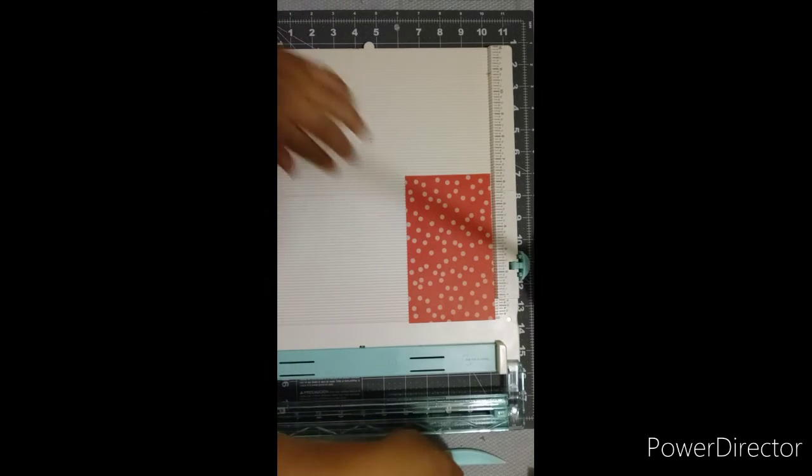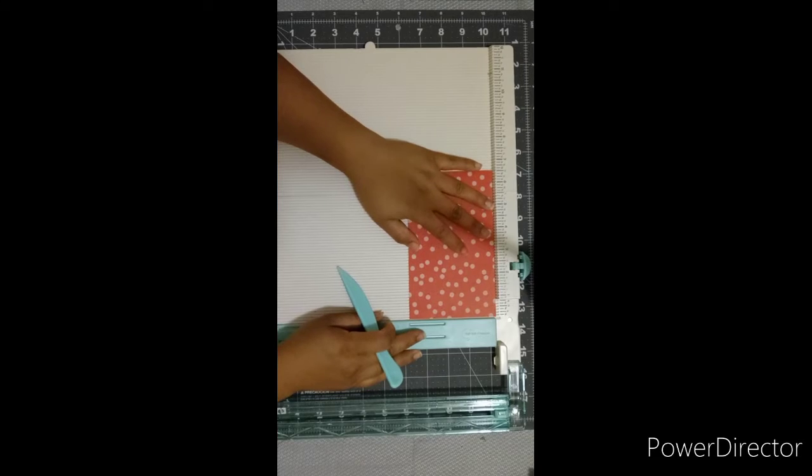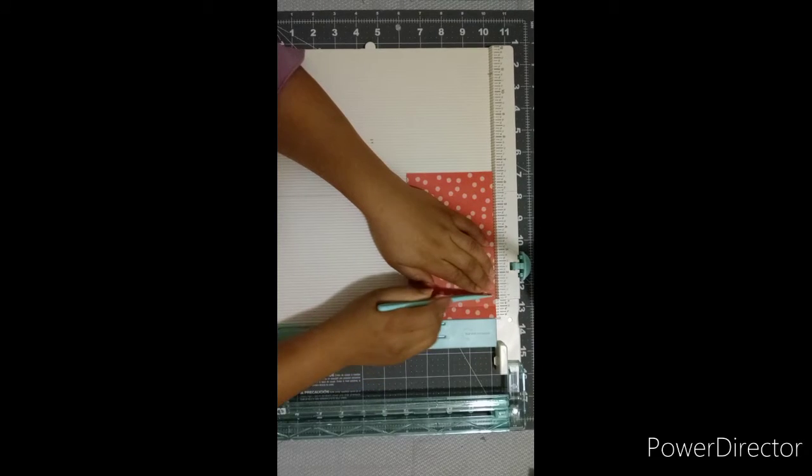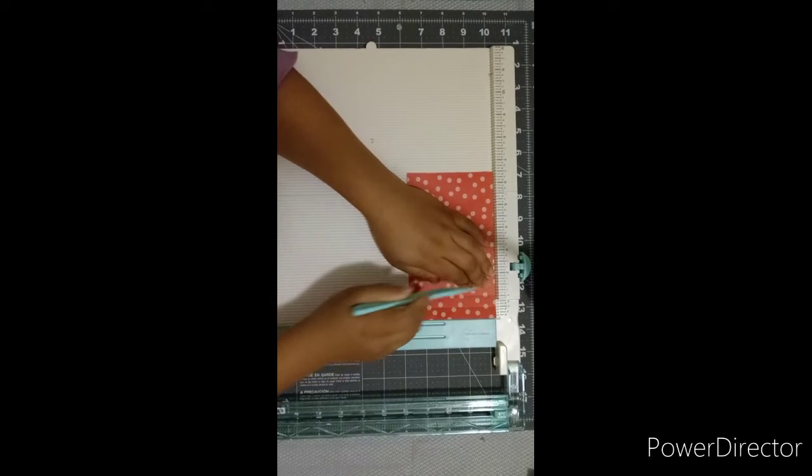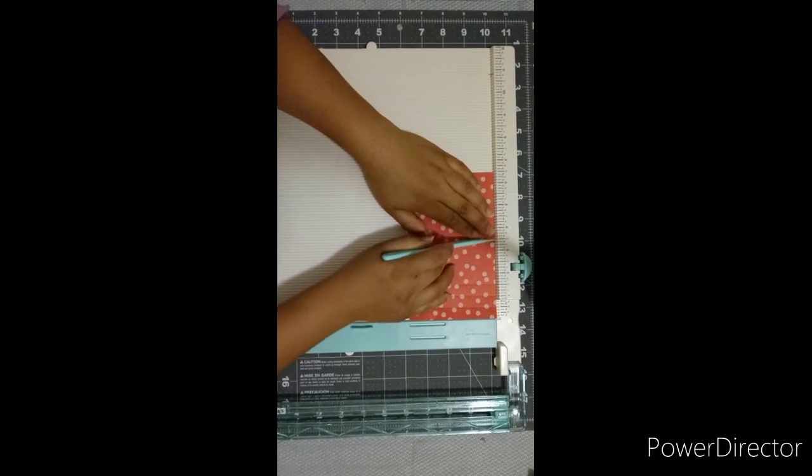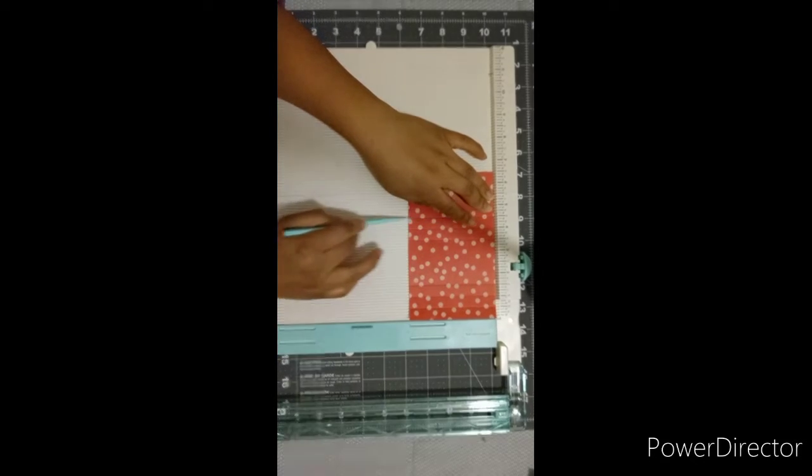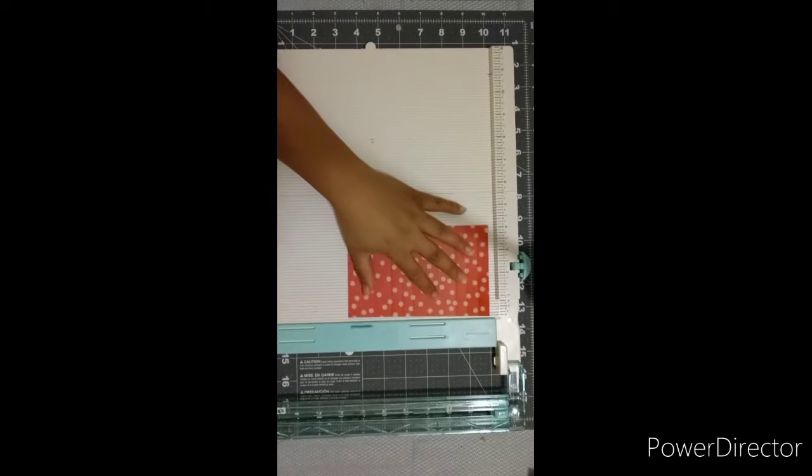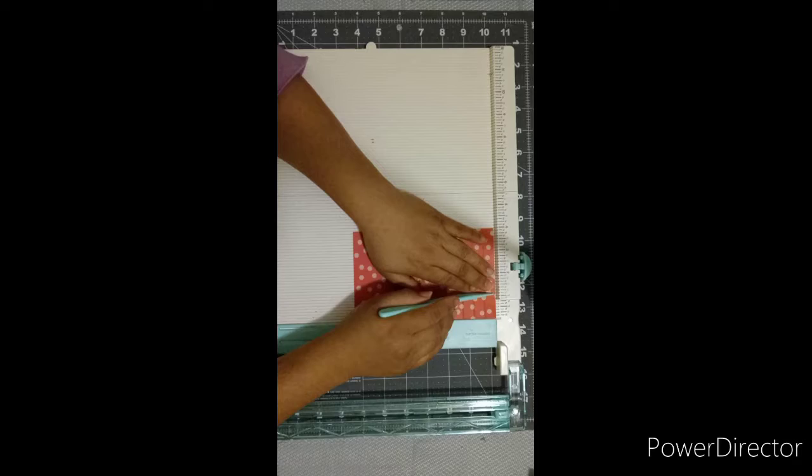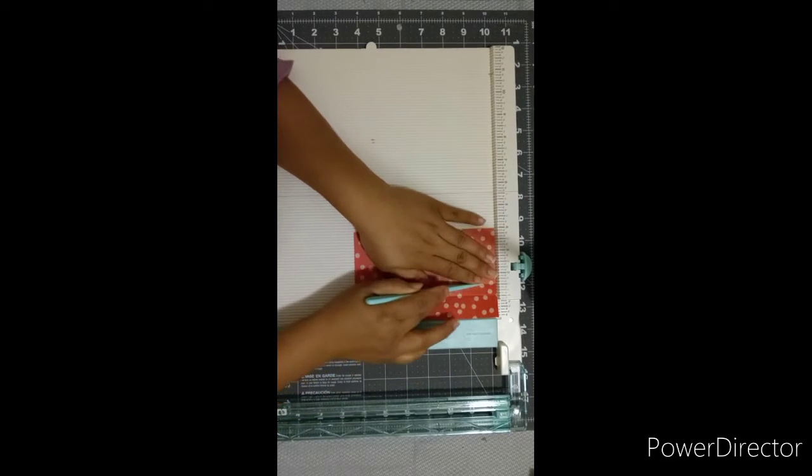Okay, we're going to use the bone folder. We are going to mark at a half, at one, at one and a half, at three and a half, at four, and four and a half. We turn and then we're going to do at one and at one and a half.